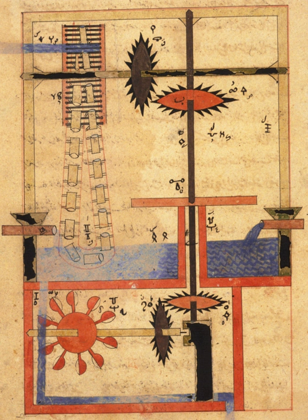Otherwise, bodies may be semi-rigid, i.e. elastic, or non-rigid, i.e. fluid. These subjects have both classical and quantum divisions of study. For instance, the motion of a spacecraft, regarding its orbit and attitude, is described by the relativistic theory of classical mechanics, while the analogous movements of an atomic nucleus are described by quantum mechanics.